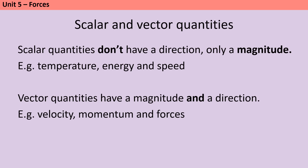Within physics we separate quantities into scalar quantities and vector quantities. Scalar quantities don't have a specific direction, they just have a magnitude or size. This includes temperature, energy and speed. Then vector quantities are ones which have both a magnitude and a direction. This includes velocity, momentum and also forces.